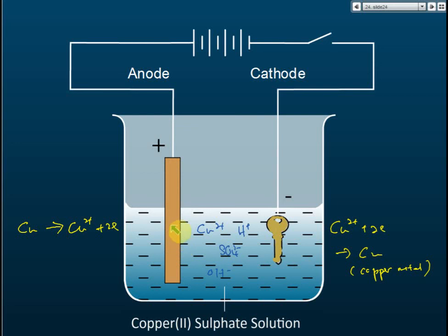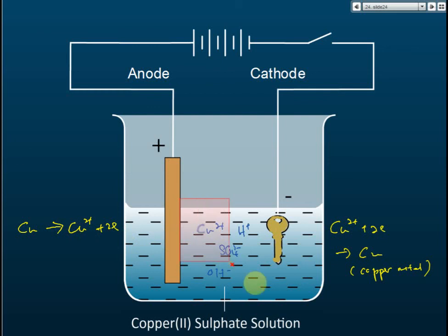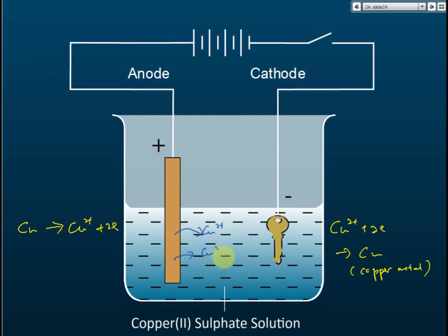At the anode, it won't discharge sulfate or hydroxide. Instead, the copper atoms inside the electrode are ionized to become copper ions by releasing electrons. So the anode supplies copper ions to the electrolyte — the copper atoms become copper ions and are released into the electrolyte.